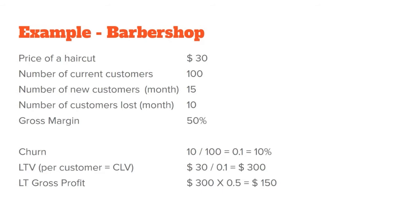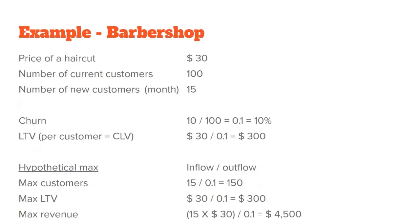If we know our gross margin, we can also calculate the lifetime gross profit per customer: $300 lifetime value × 50% gross margin = $150 gross profit over the entire lifetime of that customer. These figures help us calculate what I call the hypothetical maximum — which shows you the maximum potential of your business, and demonstrates the power of knowing your churn rate.